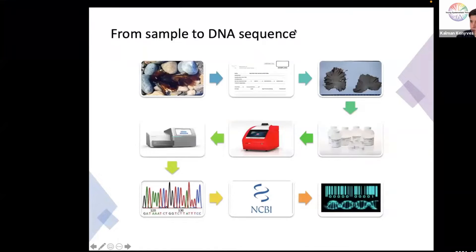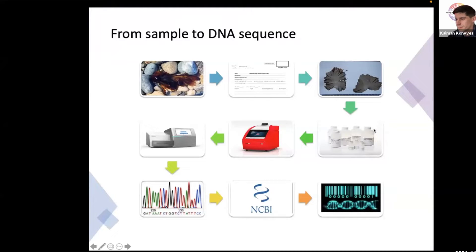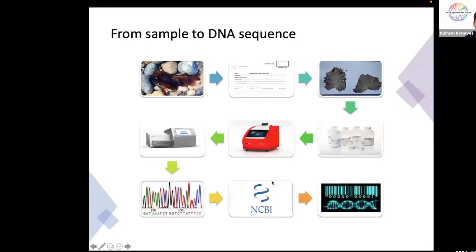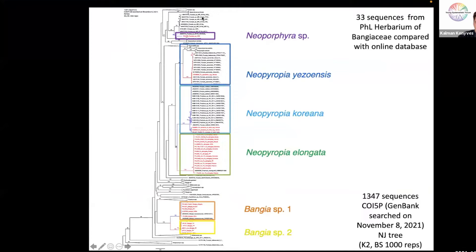For materials and methods: we collected samples and recorded all data such as sampling depth and water motion. We prepared herbarium exsiccata, and from some samples we performed DNA extraction, PCR, and sequencing. Chromatograms were used to identify sequences in online databases such as GenBank, to barcode our organisms and identify species.